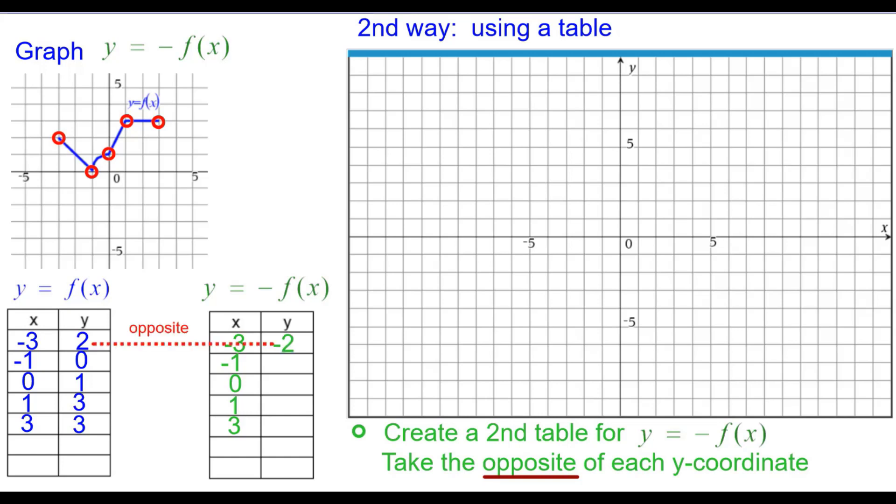So negative 3, 2 will go negative 3 comma negative 2, and I'll plot that one. Negative 1, 0 stays the same. This one goes to 0, negative 1. 1, negative 3. And 3, negative 3.